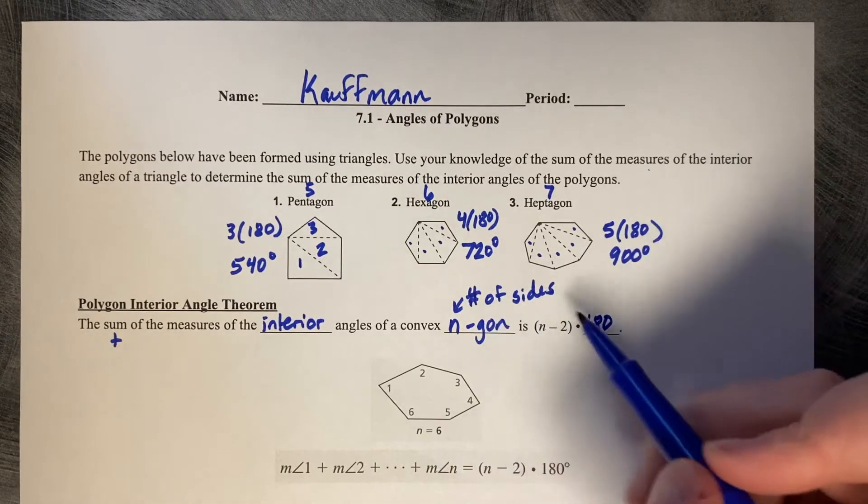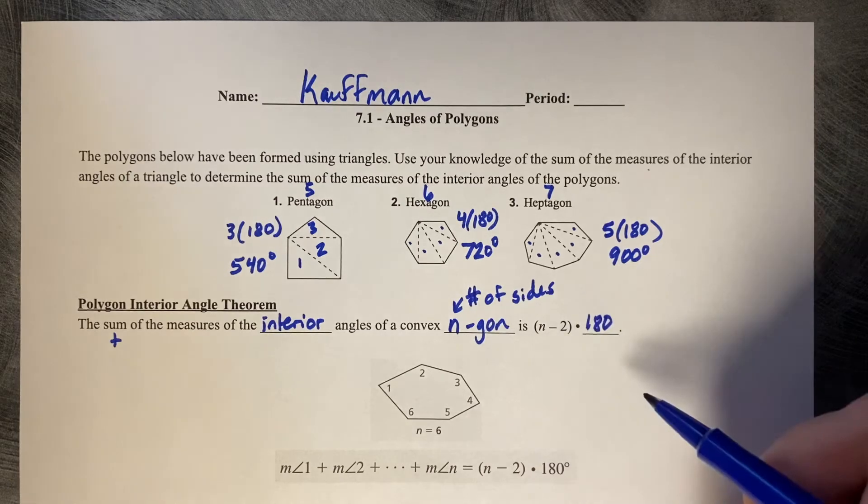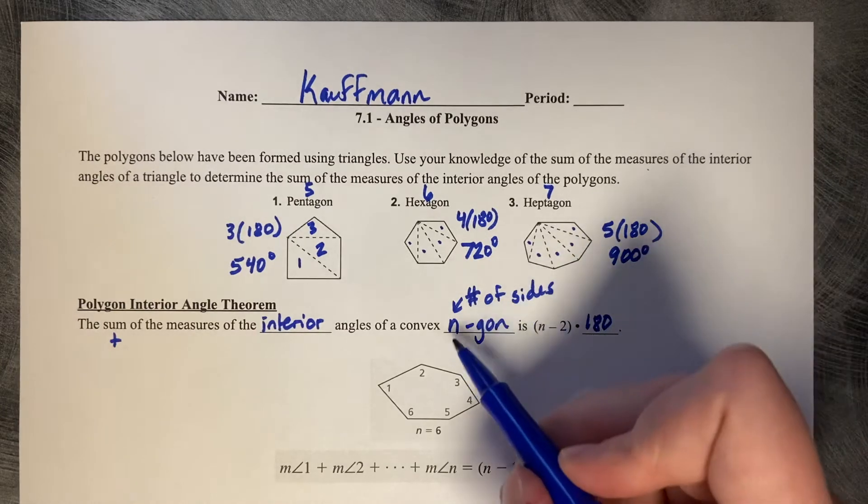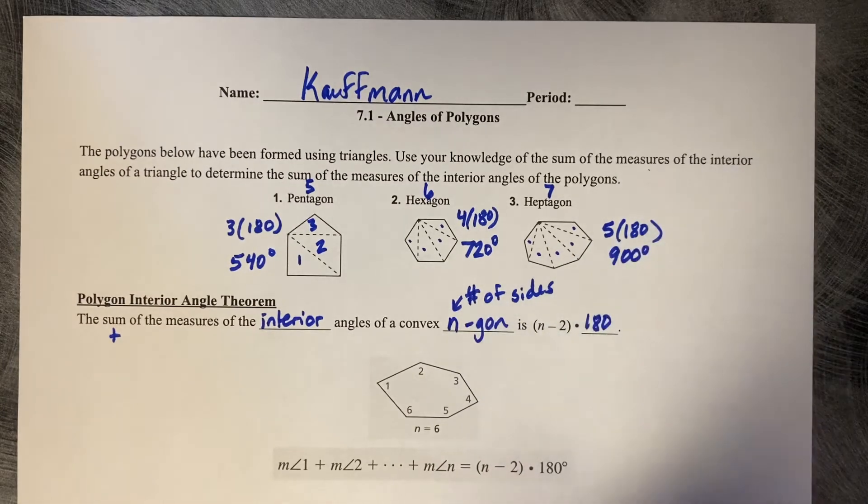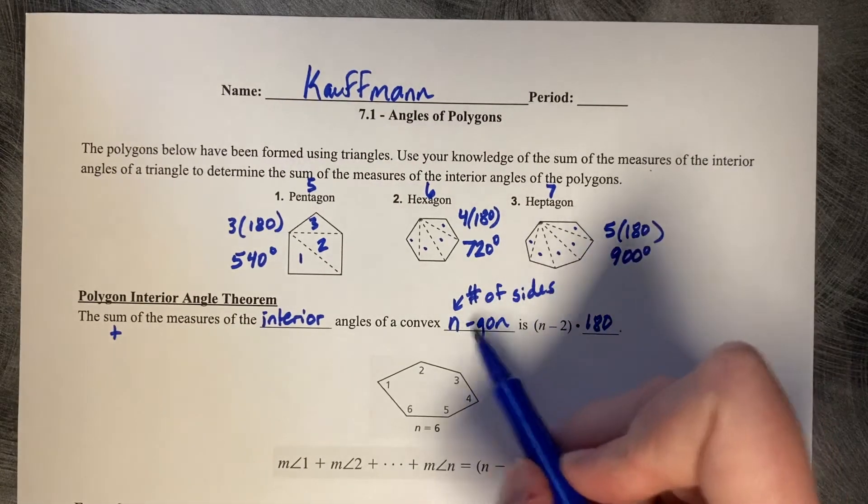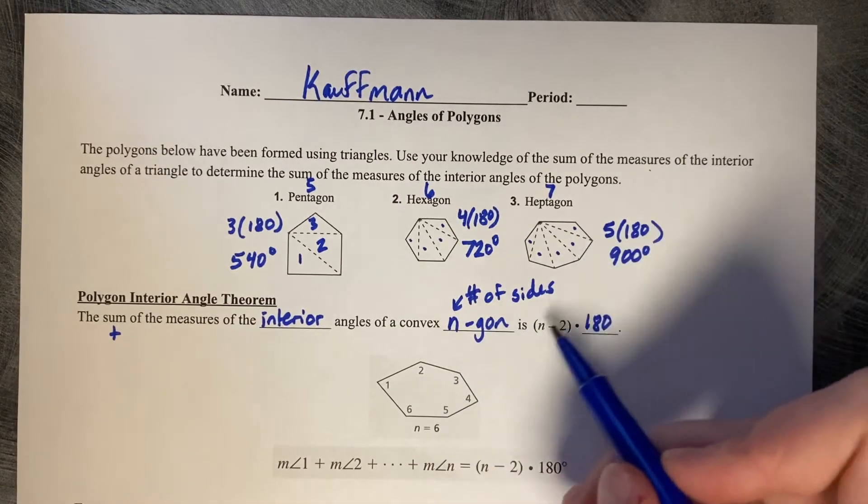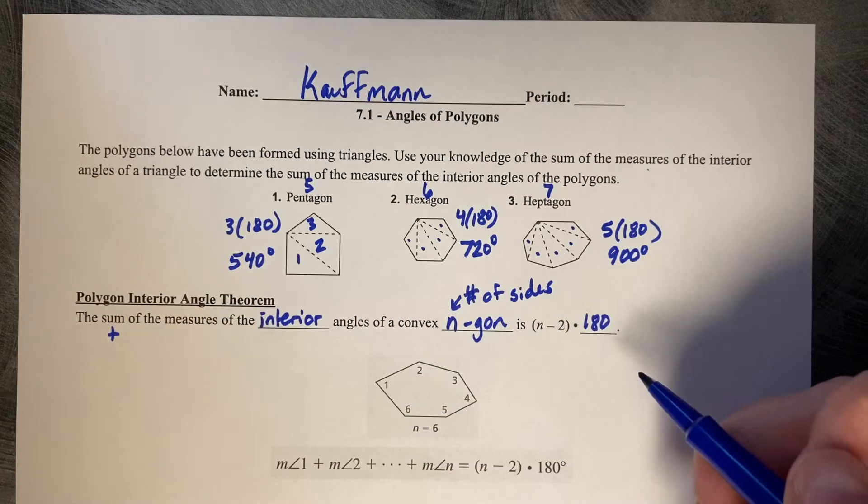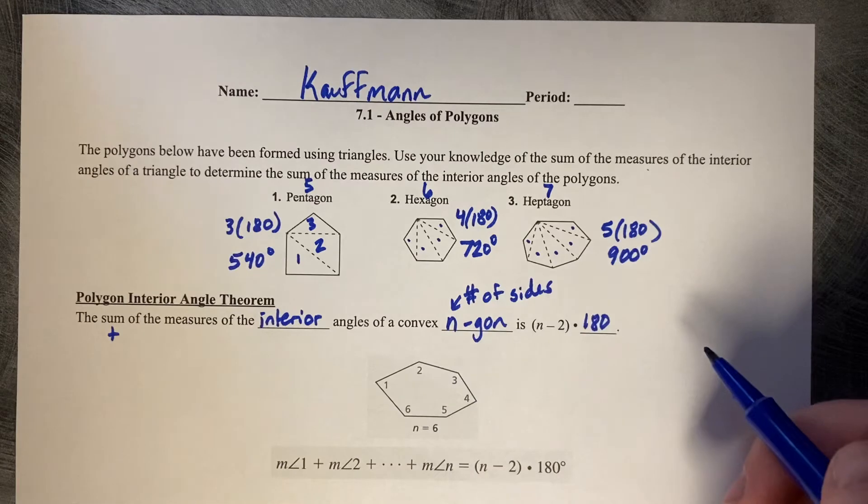So you always take the number of sides, subtract two, and multiply times 180. This is true for any figure that has any number of sides. So say you wanted to talk about a 22-sided figure, you could call that a 22-gon, and you can figure out the total sum of all the corners of that type of polygon.